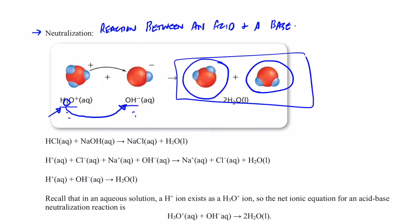A commonly used example for neutralization reactions is the reaction between hydrochloric acid HCl and sodium hydroxide. The hydrochloric acid will lose that proton to the hydroxide ion to form water, and then the Na+ and Cl- will form NaCl. Now if I were to write this ionically, I would have to write my hydrochloric acid as ions.